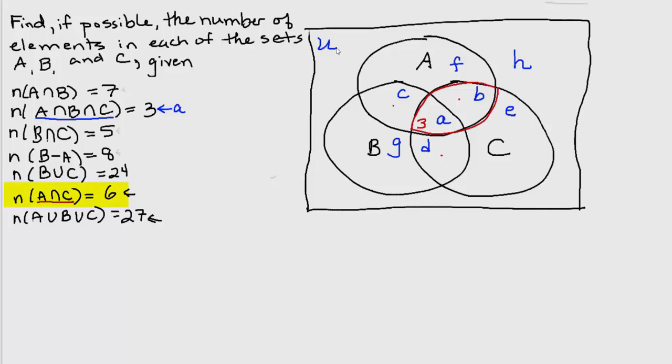We were told the number of elements in A intersect C is 6. So in order for there to be 6 in A and B together, then that means that since there were 3 in A, there would have had to have been 6 minus 3 equals 3 left for region lowercase b. So I'm going to fill that in here as well.